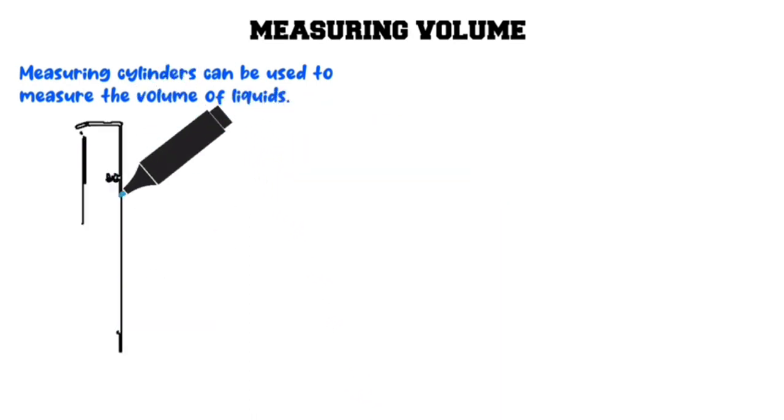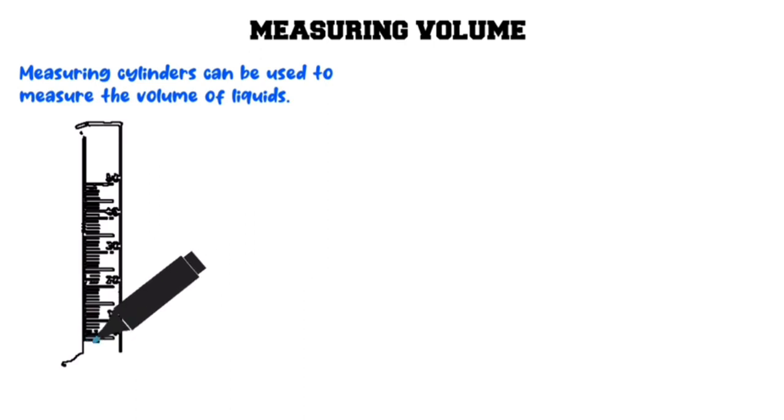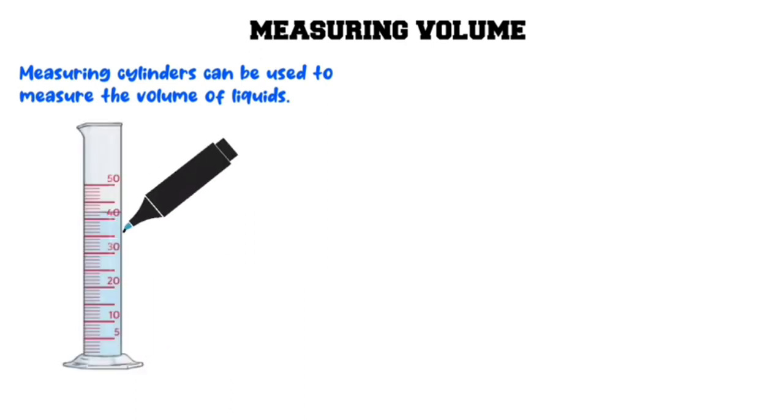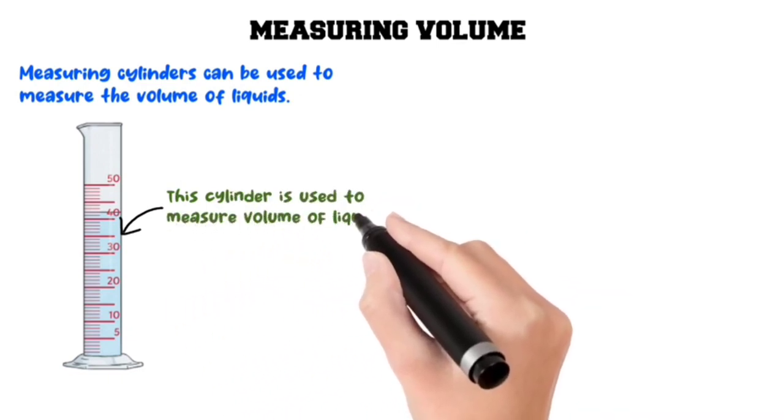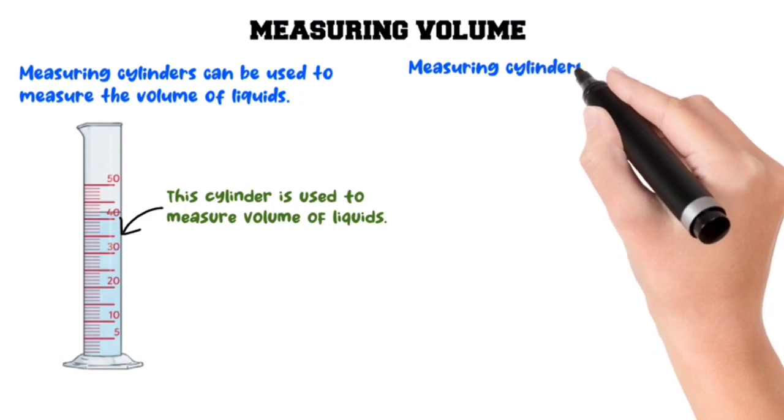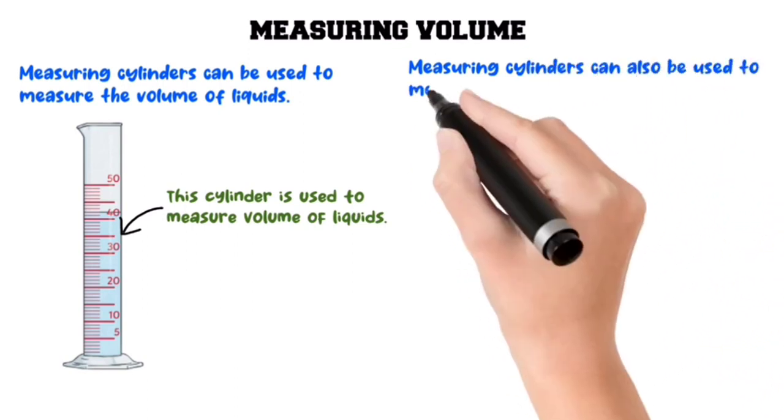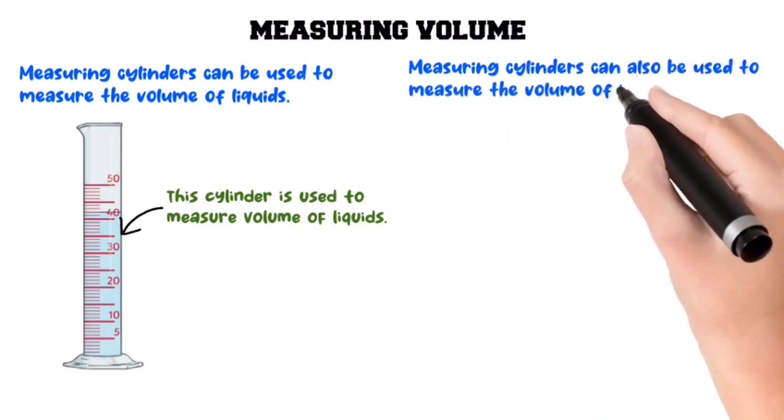This is an image of a cylinder. This cylinder is used to measure volumes of liquids. Measuring cylinders can also be used to measure the volume of irregular solids.